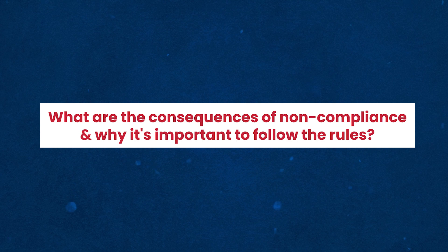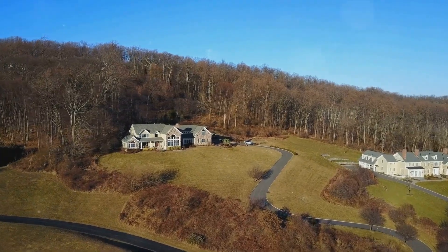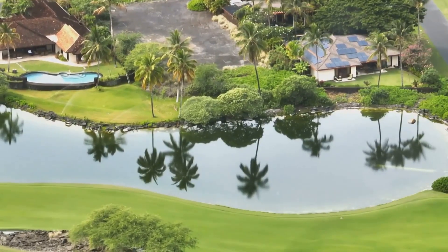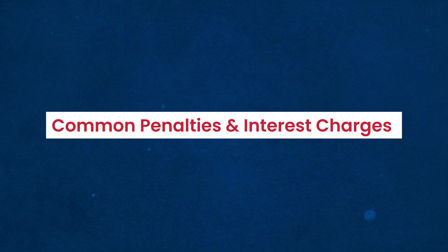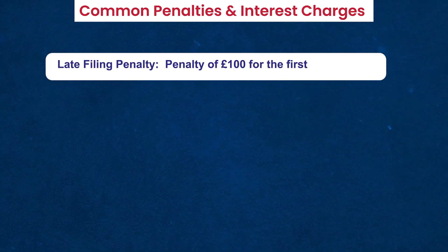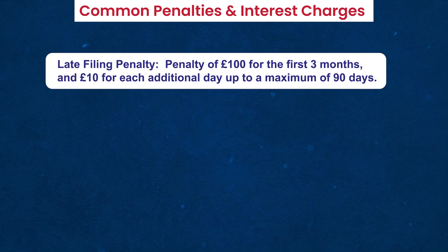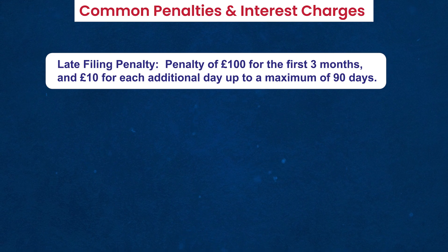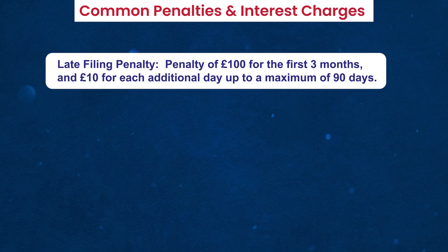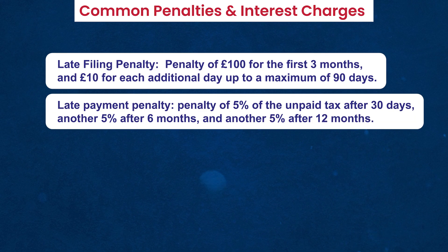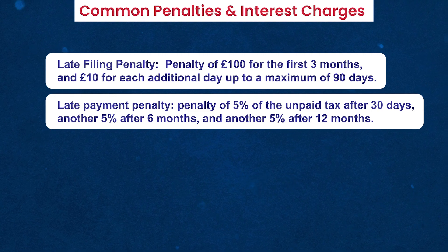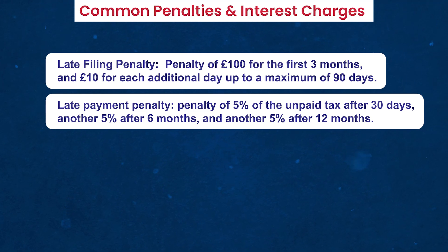What are the consequences of non-compliance and why is it important to follow the rules? If you fail to comply with the ATED rules, you may face penalties and interest charges from HMRC. Late filing penalty: if you file your ATED return after the deadline, you may be charged a penalty of £100 for the first three months and £10 for each additional day, up to a maximum of 90 days. Late payment penalty: if you pay your ATED after the deadline, you may be charged a penalty of 5% of the unpaid tax after 30 days, another 5% after 6 months, and another 5% after 12 months.